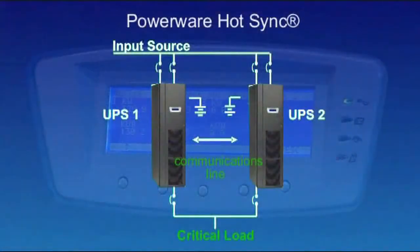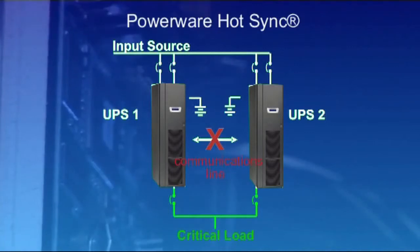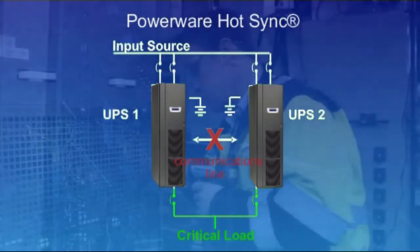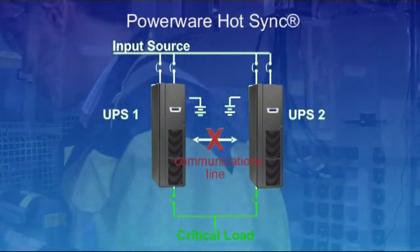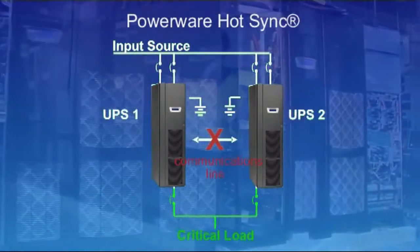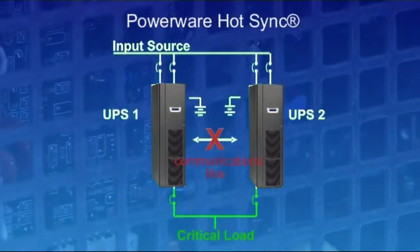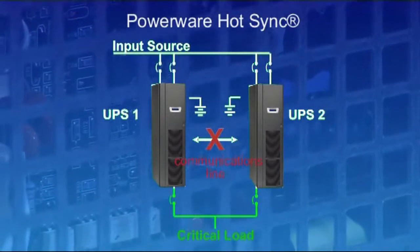Should a failure of any kind occur in a parallel HotSync configuration, the critical load still remains protected. This unique technology enables the UPS parallel system to operate without the need for any communication line between the UPSs or the external synchronization signal being transmitted to system modules. This eliminates the system level single point of failure.